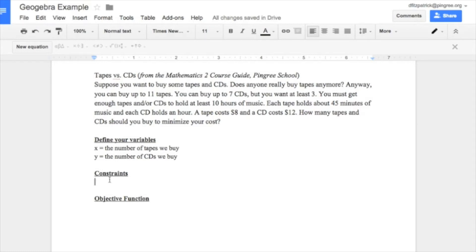Now we need to define our constraints. We'll do this through a few inequalities. The first one comes from this sentence here. You can buy up to 11 tapes. So we must have, we're going to do tapes, which is x. We're going to put in the equation, x is less than or equal to 11.